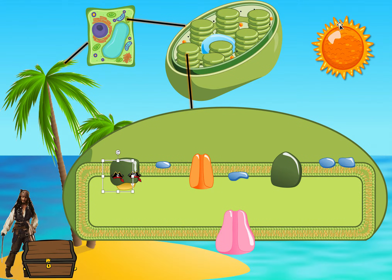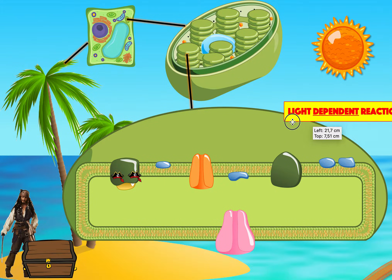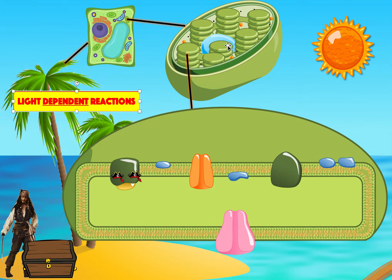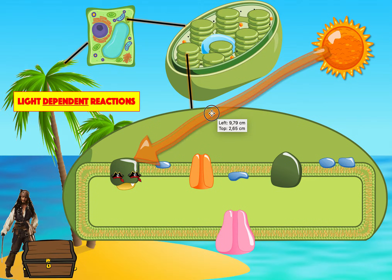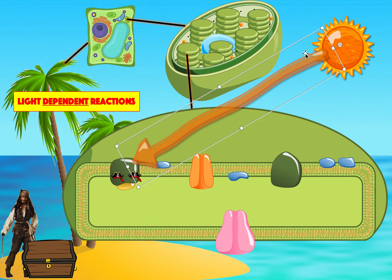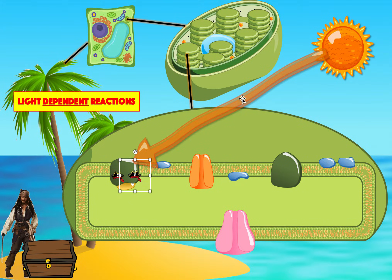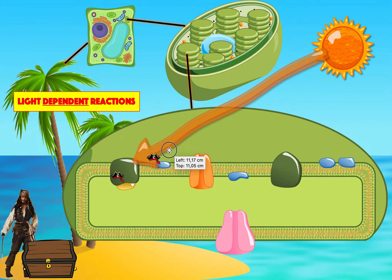Now, when light shines — and we know the sun is involved in this stage — we're talking about the light-dependent reactions, which happen in the thylakoid. When the sun shines, it gives off some light energy. This energy goes into the photosystem and hits these electrons, exciting them. It transfers the energy from light into these electrons, so they become excited and move right out of the photosystem with a lot of energy.